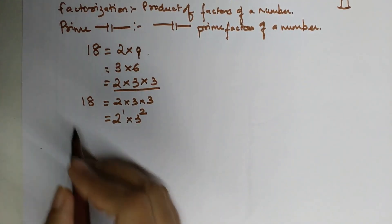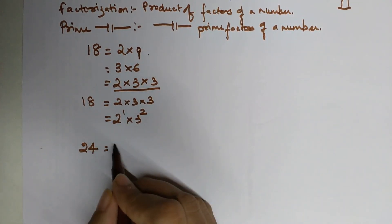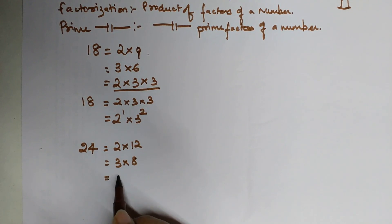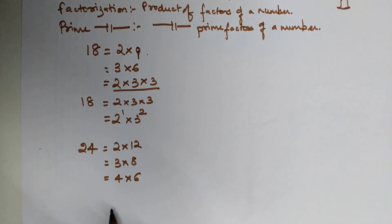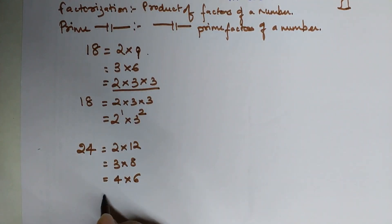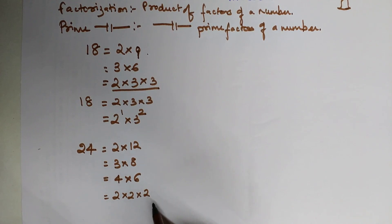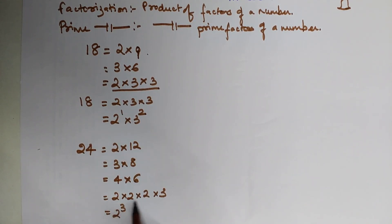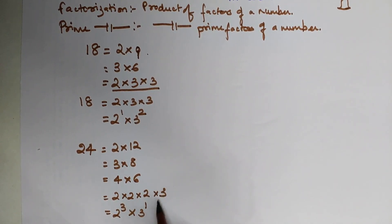Now let's take another example. What will be the prime factors of 24? 2 into 12 can be one of the factors, another factor would be 3 into 8, another would be 4 into 6. But since we want to represent 24 in terms of prime factorization, we write 24 as 2 into 2 into 2 into 3. The final answer in exponent form is 2 raised to 3 — because 2 is multiplied 3 times — into 3 raised to 1, because 3 was multiplied only once.